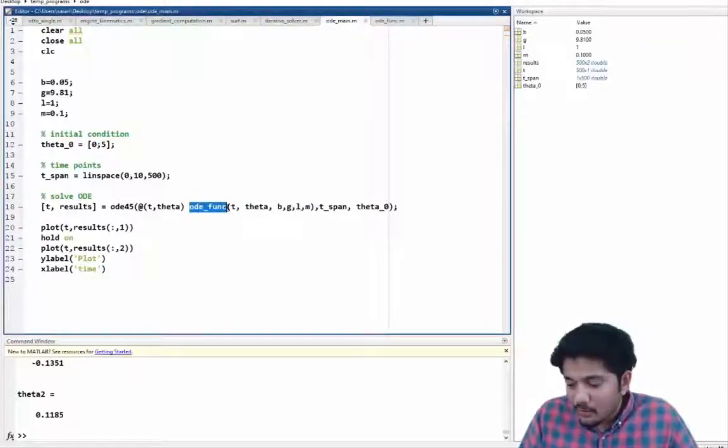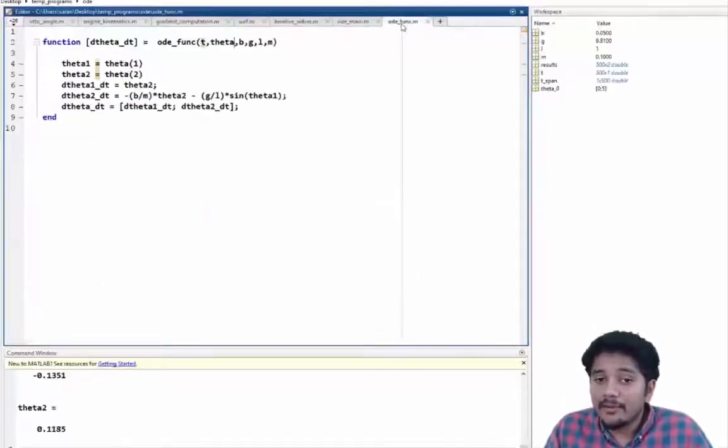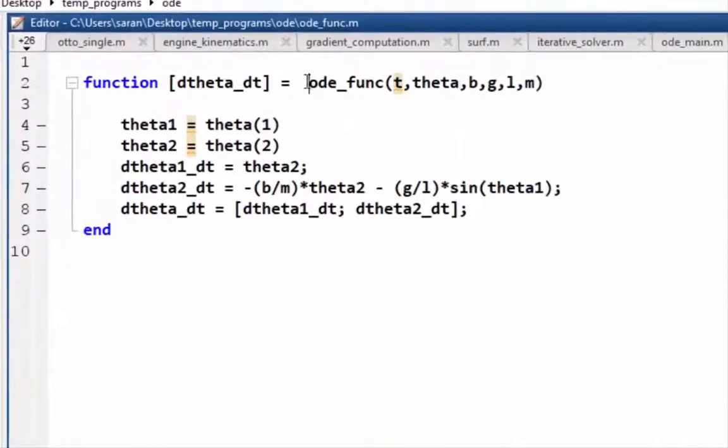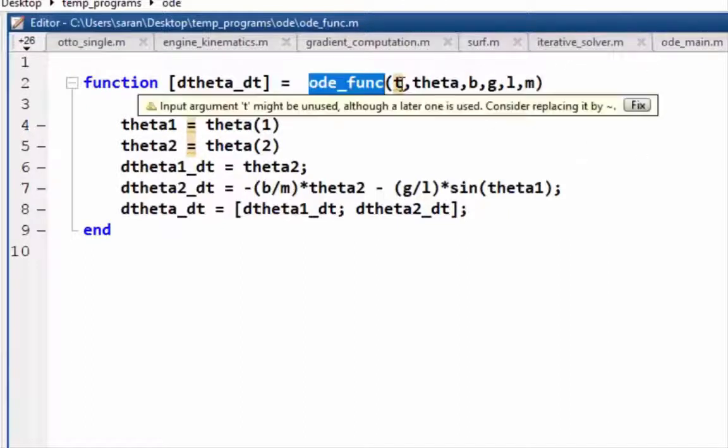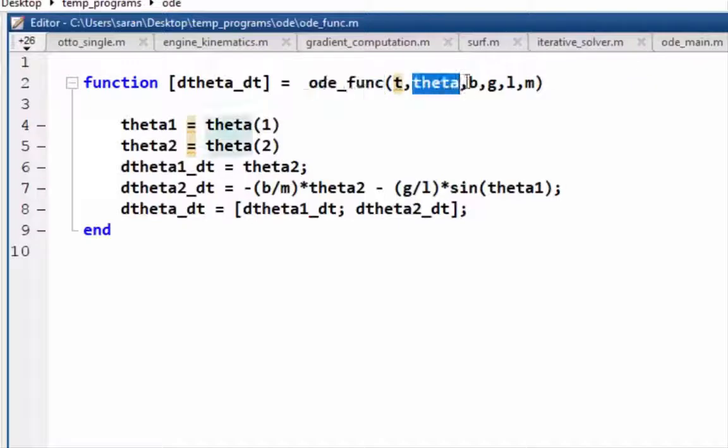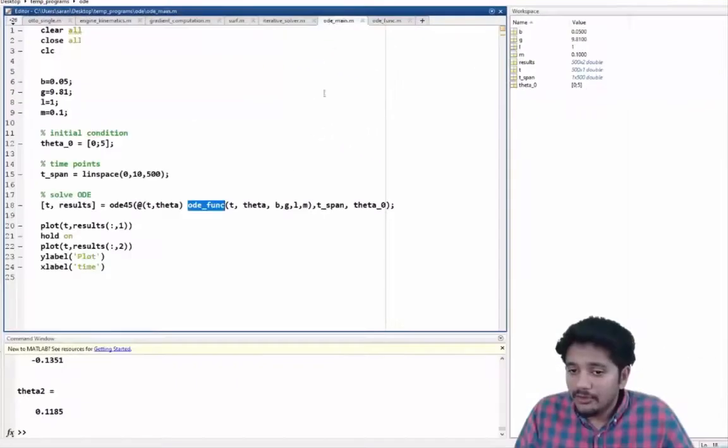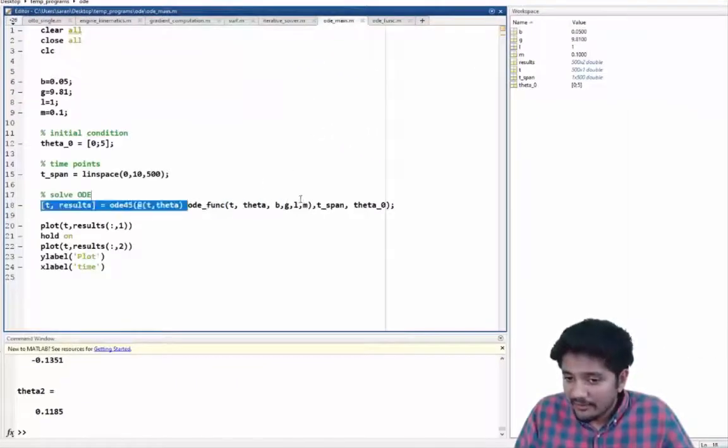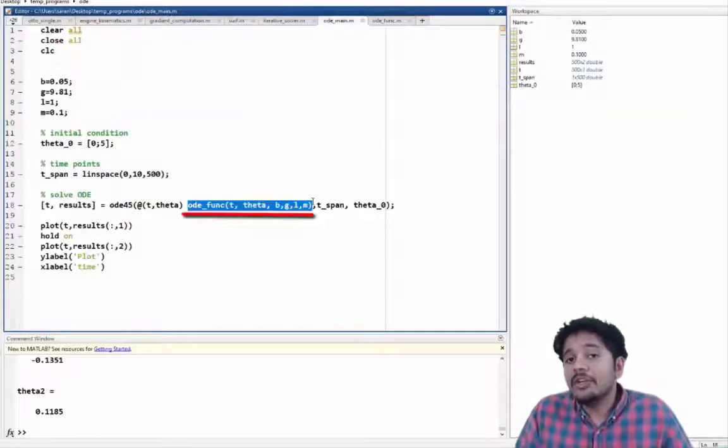So ODE underscore FUNC, what is that? Well, that's nothing but a separate MATLAB program that we have written. See that it's called as ODE underscore func. The same name is given and its input arguments are t the time, theta, b, g, l and m. So you can see that that's exactly what I have here. So this is nothing but our ODE function definition.